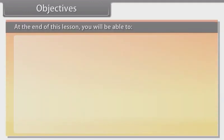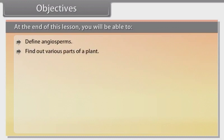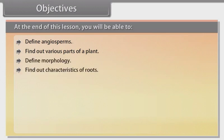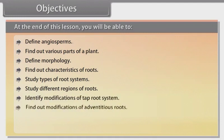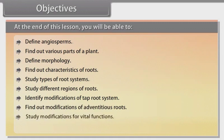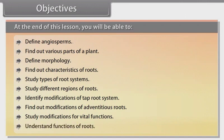At the end of this lesson you will be able to: define angiosperms, find out various parts of a plant, define morphology, find out characteristics of roots, study types of root systems, study different regions of roots, identify modifications of tap root system, find out modifications of adventitious roots, study modifications for vital functions, and understand functions of roots.